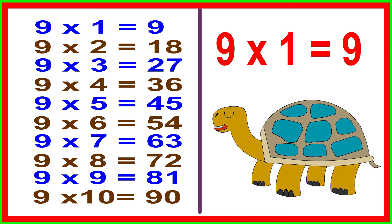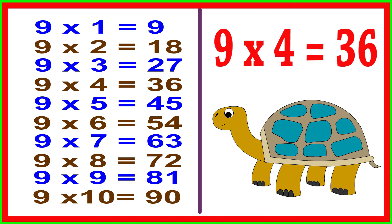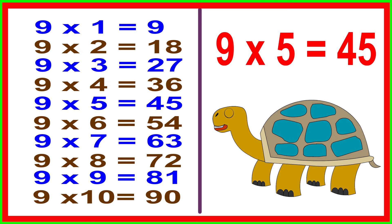9 times 1 equals 9, 9 times 2 equals 18, 9 times 3 equals 27, 9 times 4 equals 36, 9 times 5 equals 45.